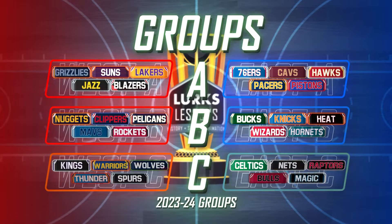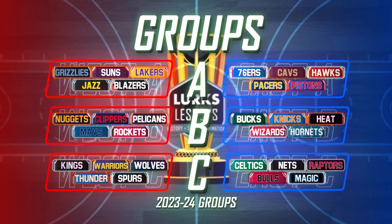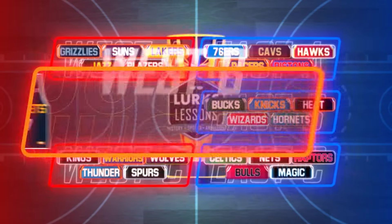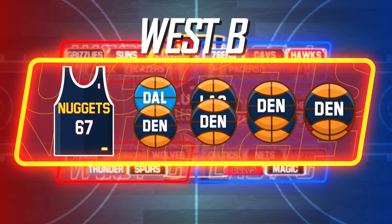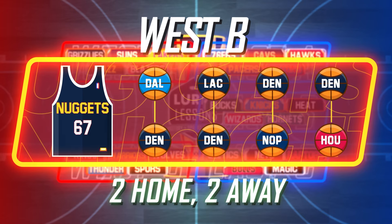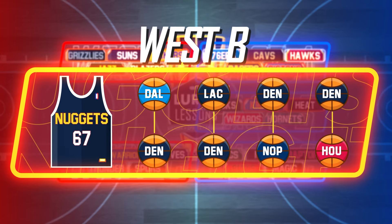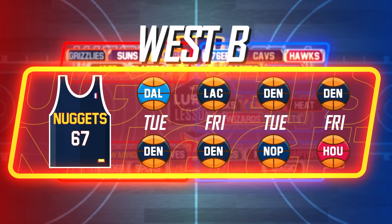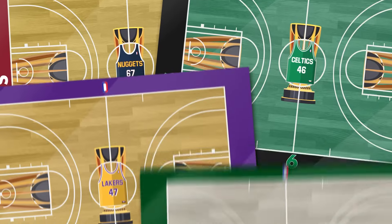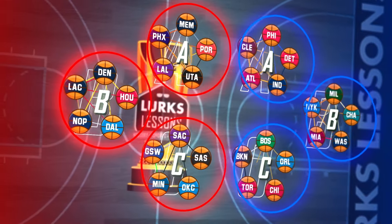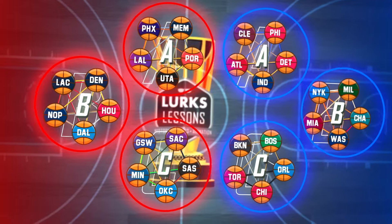Here are the groups for the 2023-24 NBA Cup. With the groups organized, each team will play one game against each opponent in their group, with two games at home and two on the road. Currently, these tournament games will be played on Tuesdays and Fridays during the month of November, and will have a tailored tournament custom court design installed. Even though these games are for tournament play, they will also count to the team's regular season record.